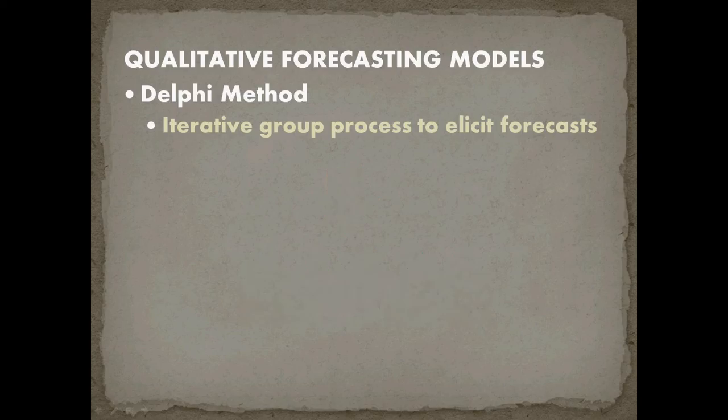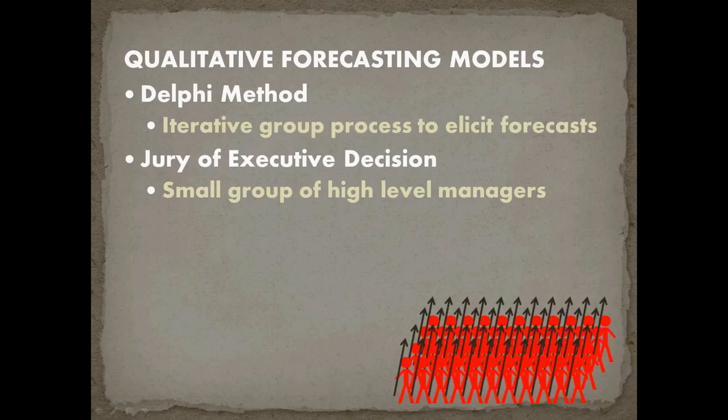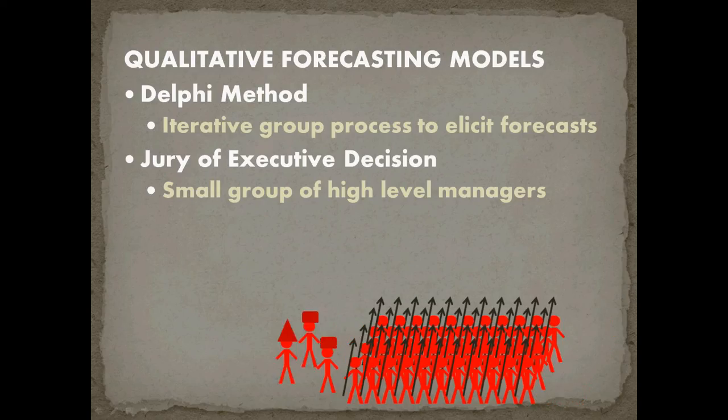After the Delphi method we have a jury of executive decision and so this is when you've got the top levels of an organization forecasting how we think the organization is doing. So if you think of our barbarian horde from earlier, at the front of that barbarian horde are probably the generals and the generals predict where their next victory will lie and in what direction. Once they make that forecast that horde heads off in that direction.